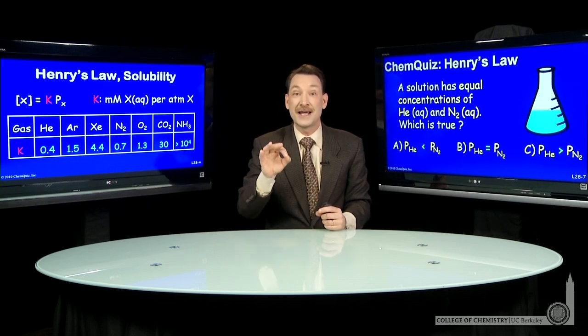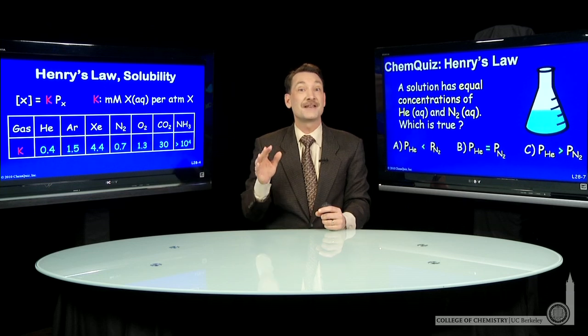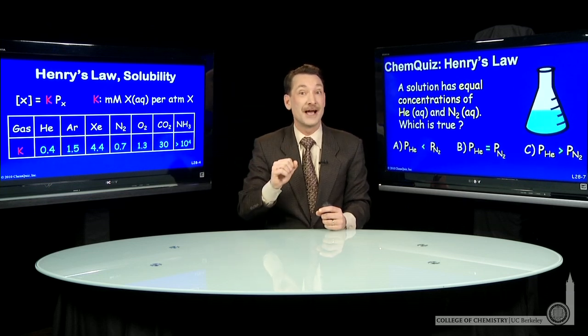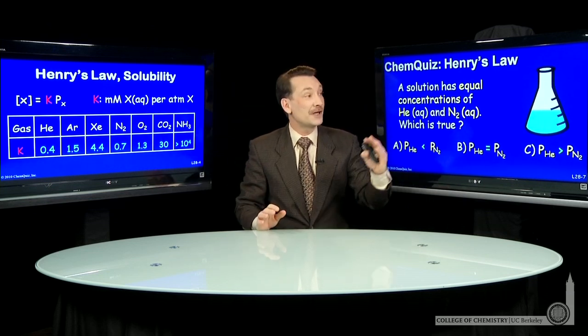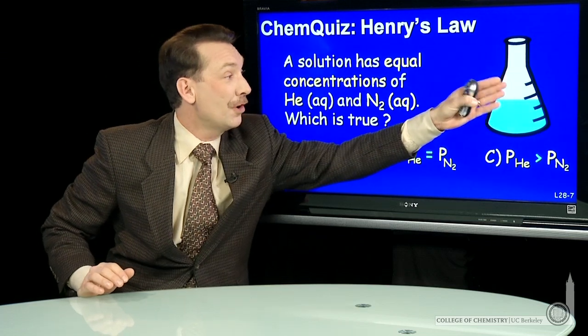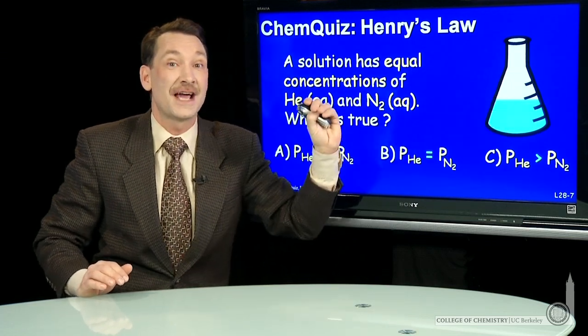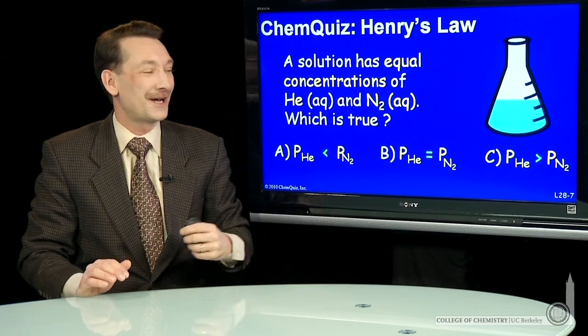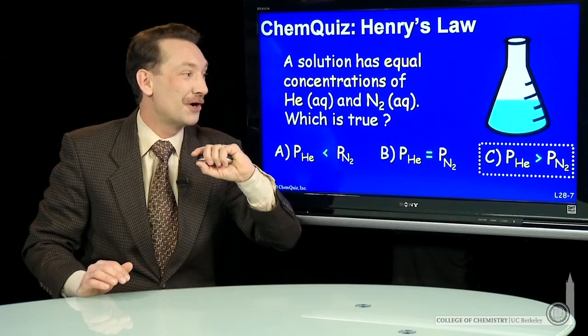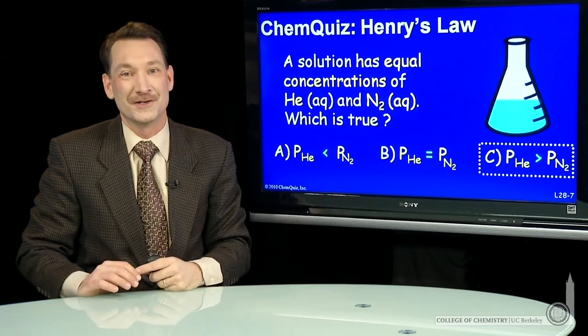So that means to get the same concentrations, we need to have a slightly higher pressure of the helium gas. When we look at our solution, we'll have more helium gas over the solution than nitrogen gas to get the same concentrations. The correct answer here is: helium partial pressure is greater than nitrogen.